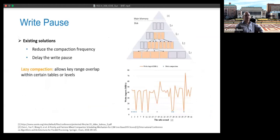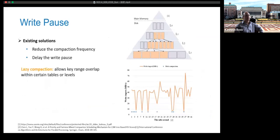Since compaction is handled in the background, on heavy write workloads, write pauses may occur. Flushing new data to disk is hindered by frequent compaction, reducing write performance. Compaction is scattered throughout multi-levels. The existing solution is to reduce compaction frequency or delay the write pause — for example, lazy compaction, which allows key-range overlap within certain SSTables. Although write throughput improves at upper levels, compaction becomes more severe at lower levels. Few works focus on accelerating the compaction operation itself.